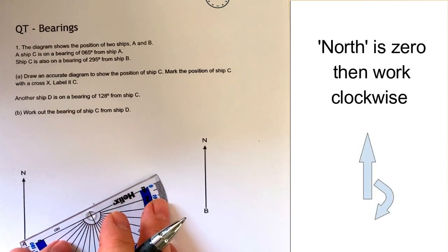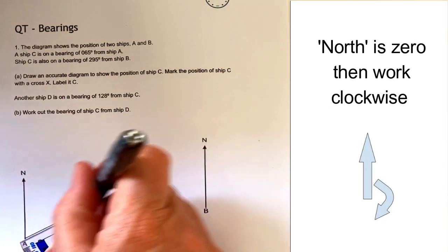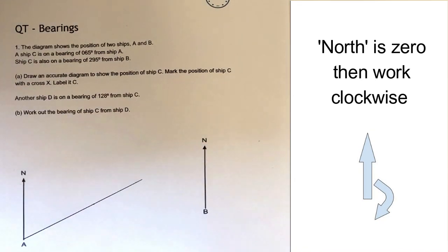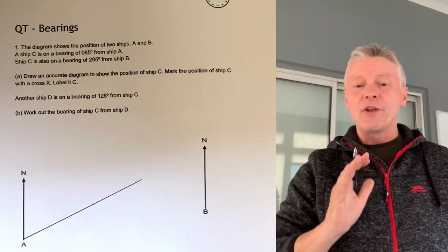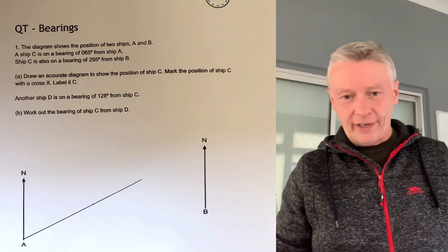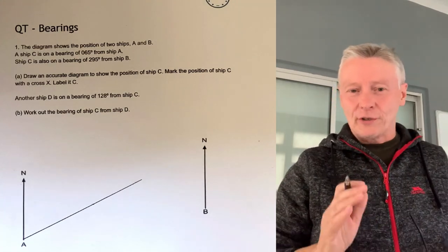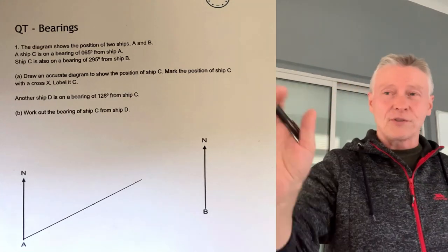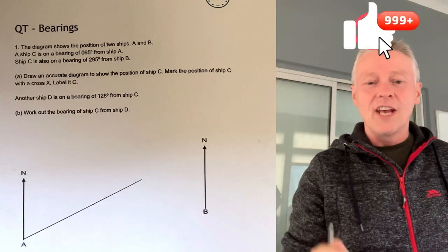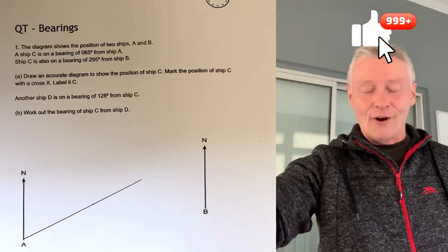I'm just going to draw a little line across that. The way bearings work is that it's always from the north clockwise. So if you can imagine if you're on ship A and you're looking across towards slightly towards your right hand side, you should be able to see ship C somewhere along the 65 degrees from north.